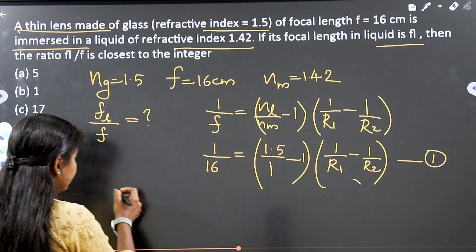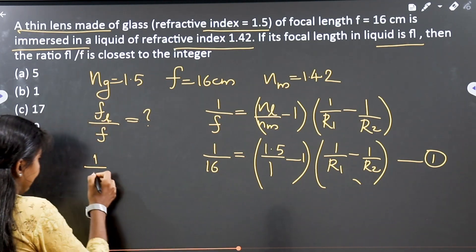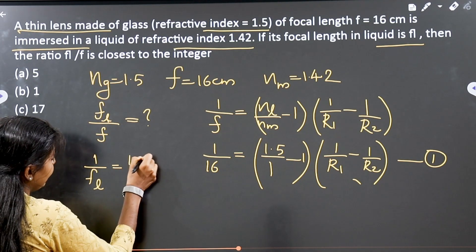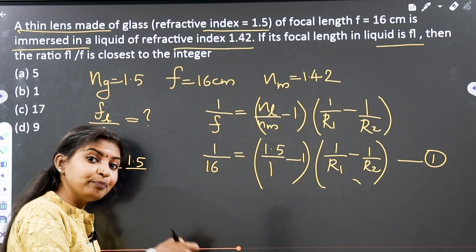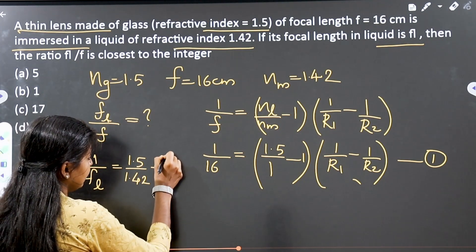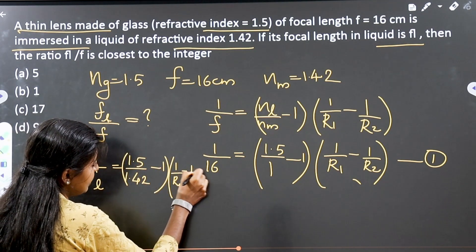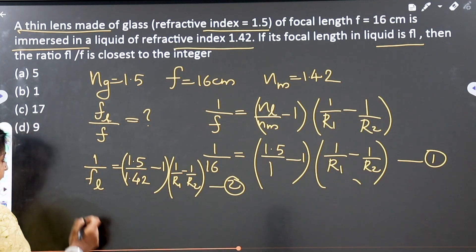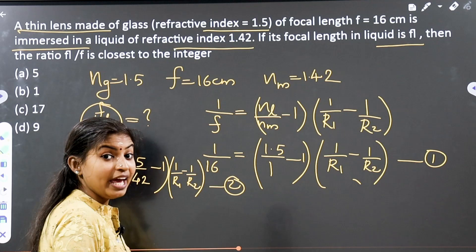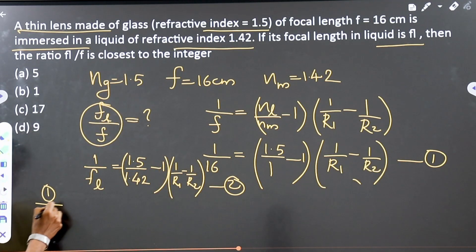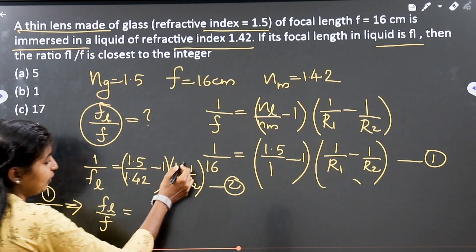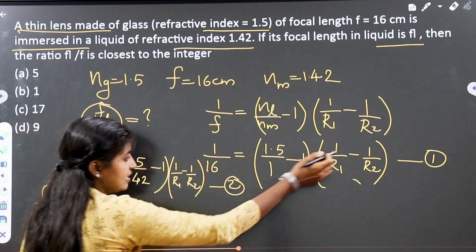In equation number 2, for the lens immersed in liquid: 1/F_L equals (1.5 divided by N_M, where N_M is the refractive index of the medium, that is 1.42, minus 1) times (1/R₁ − 1/R₂). Dividing equation 1 by equation 2, the terms (1/R₁ − 1/R₂) cancel, and we get F_L by F.